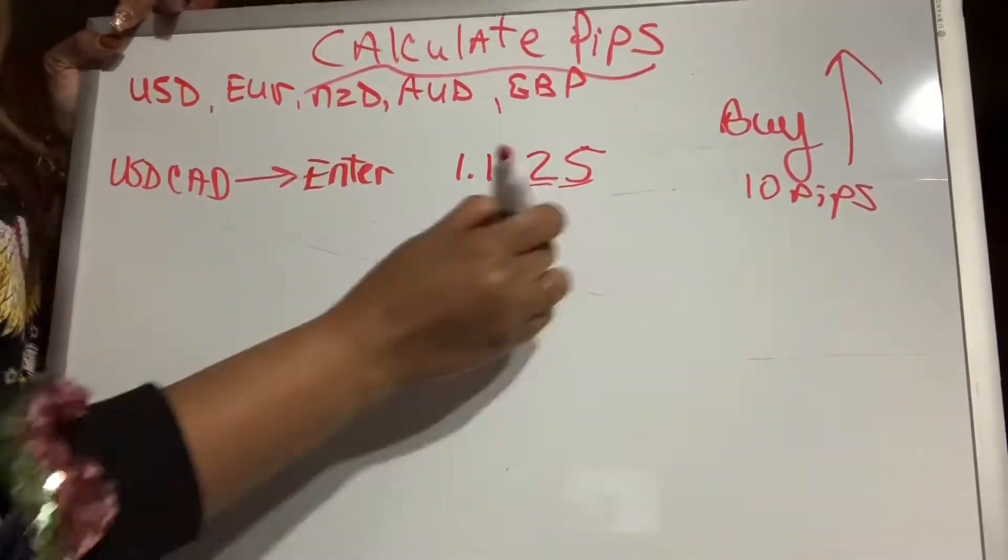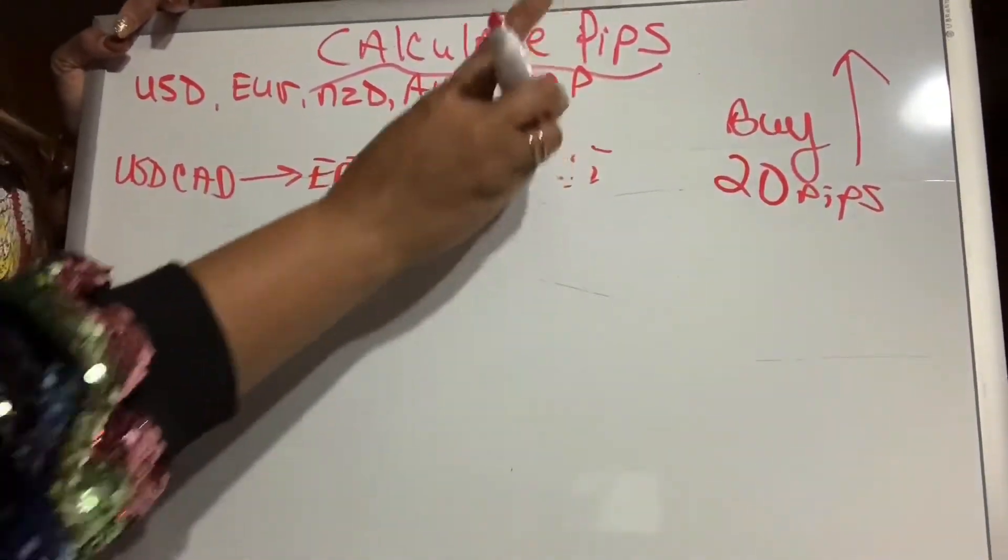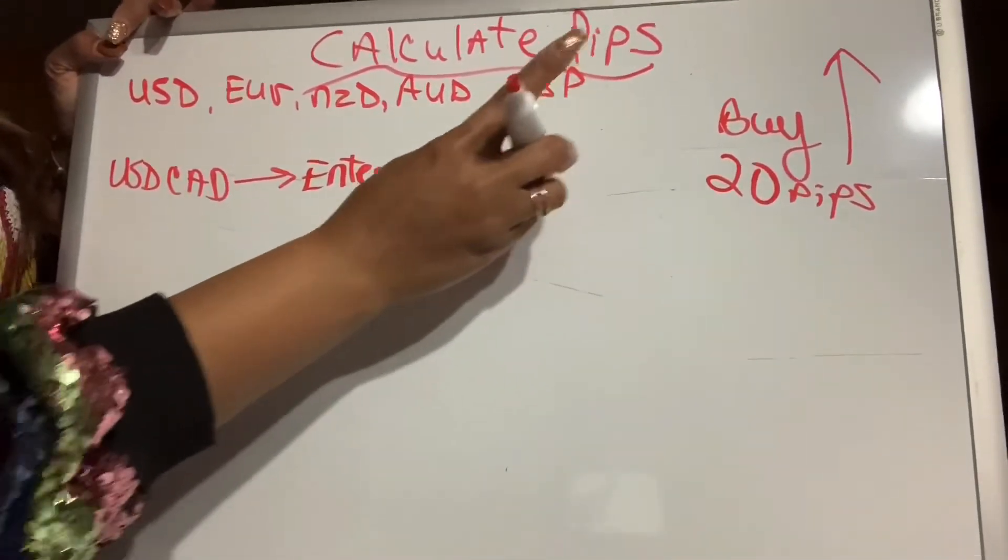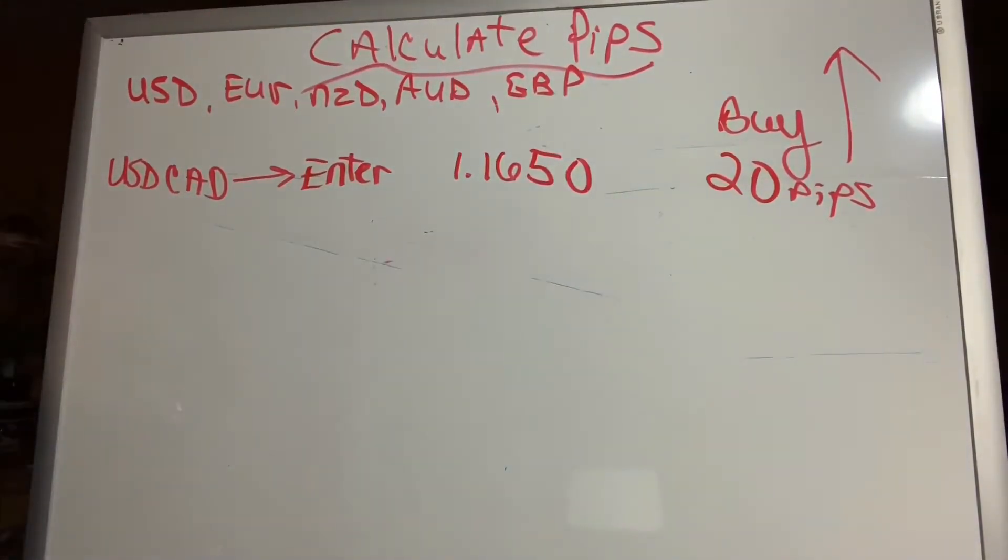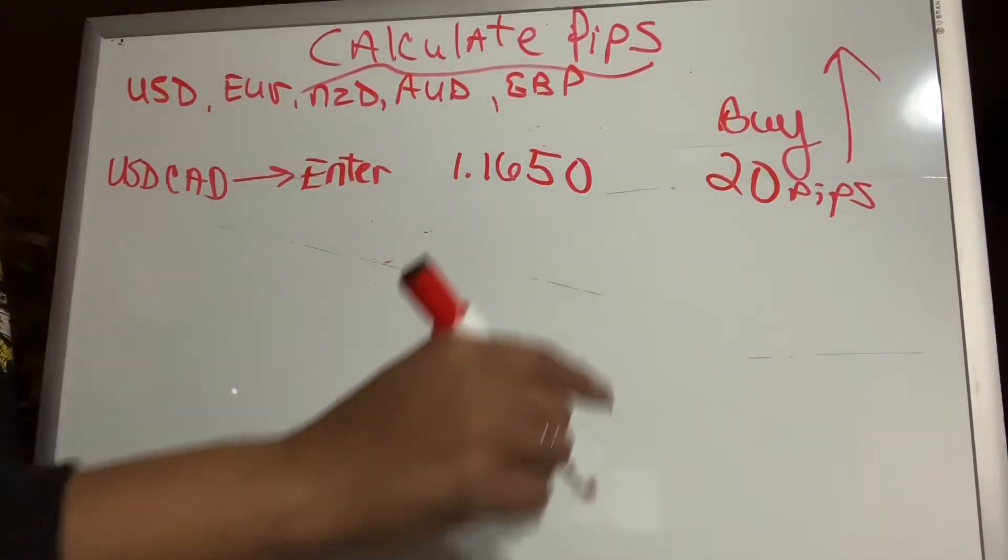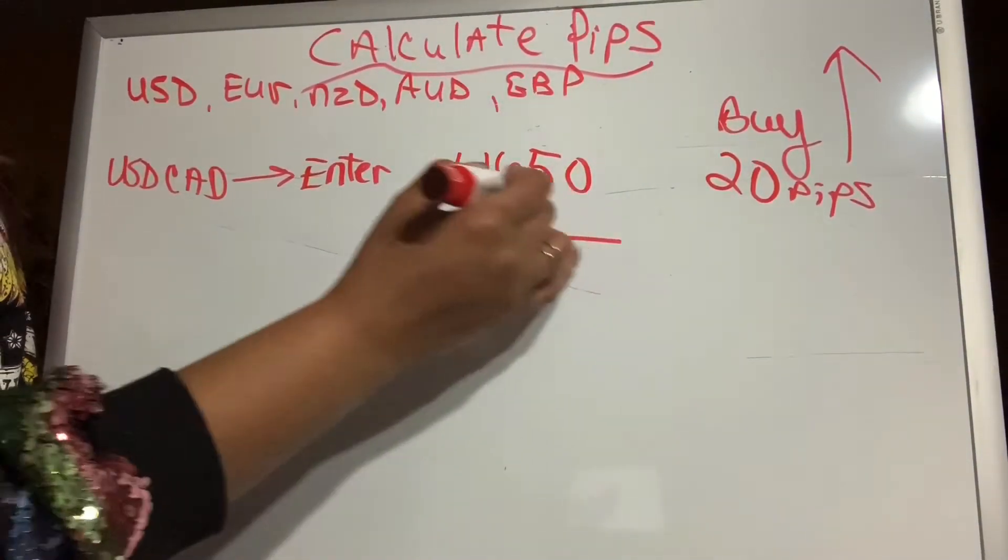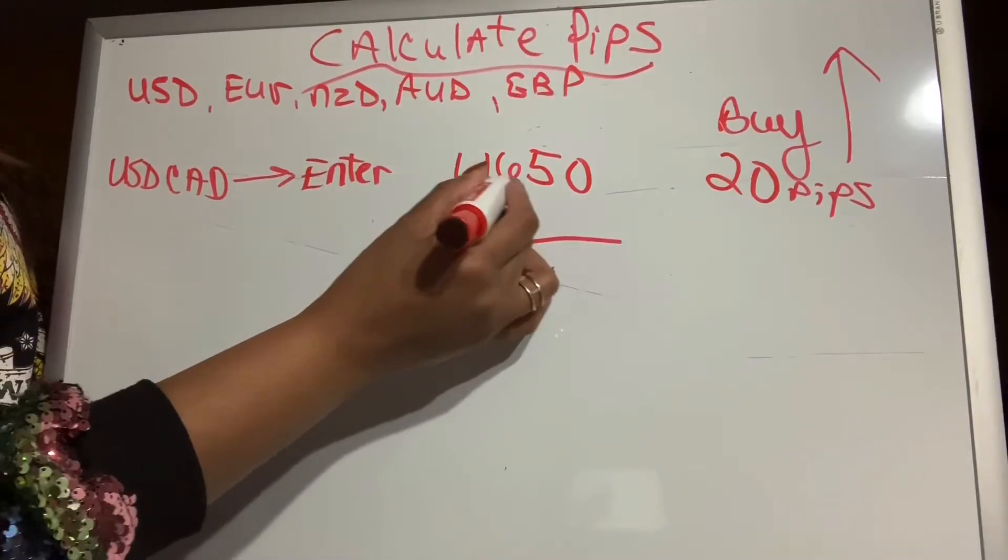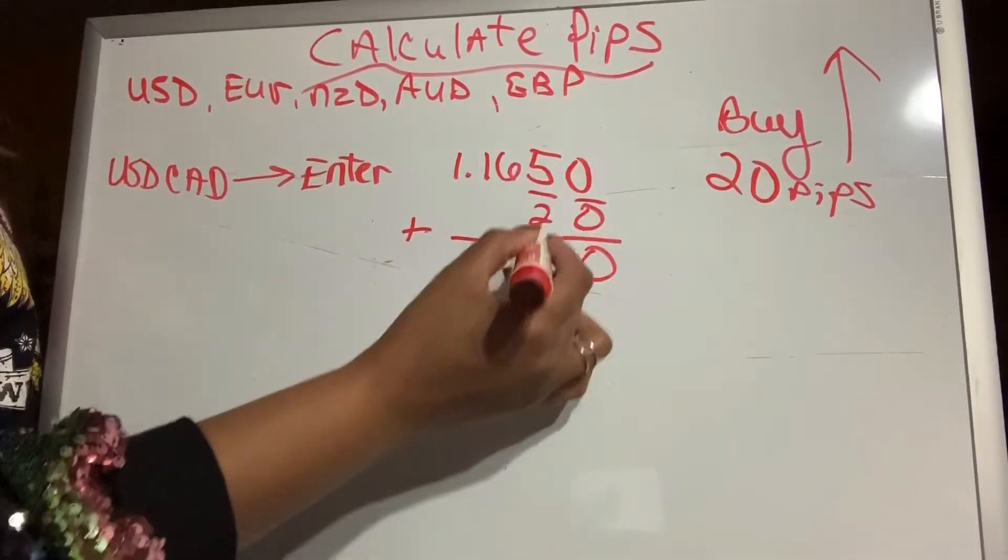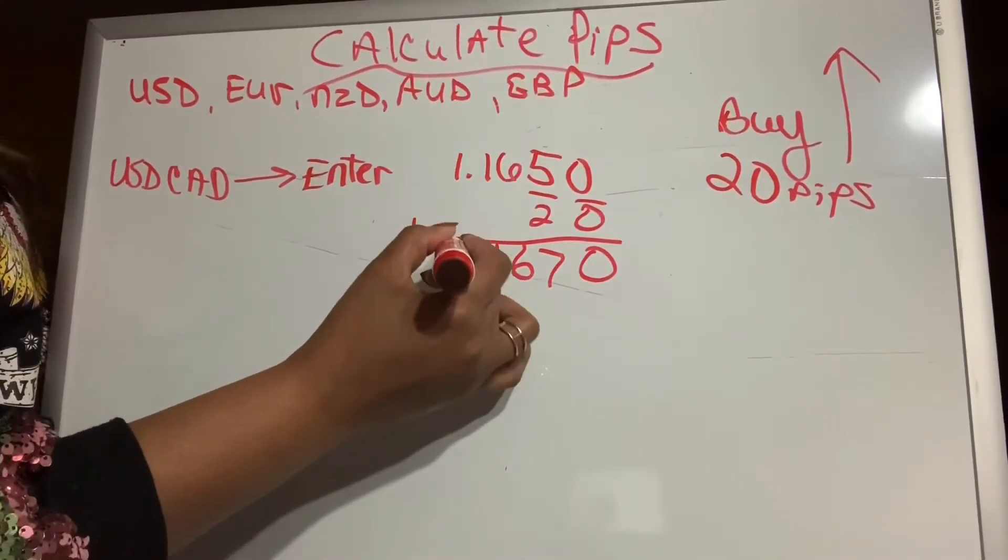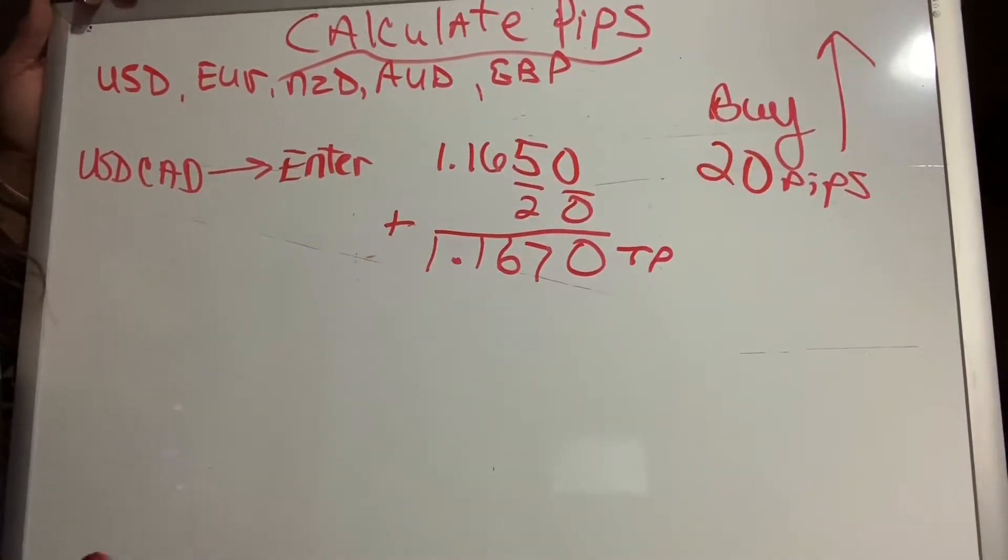Let's say you want to catch 20 PIPs. You want to catch 20 PIPs, and you enter the market at 1.1650. We want to add 20 PIPs, and we're in a buy. We want the market to go up when you're in a buy. So I'm going to add 20 to the decimal, one, two, third, and fourth number. So add 20, bring my zeros down, 5 and 2 is 7, 6, 1, 1. This is our take profit. That's how you calculate PIPs.